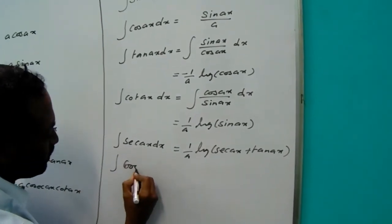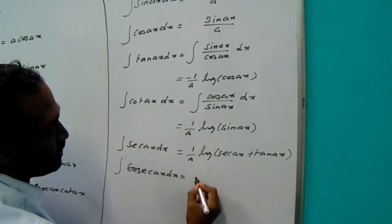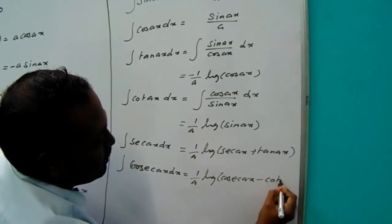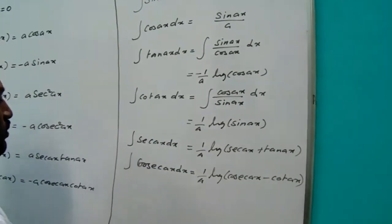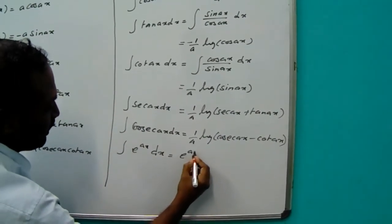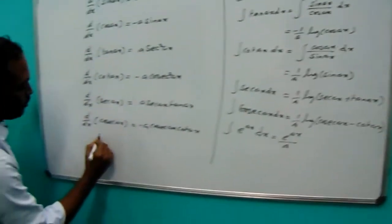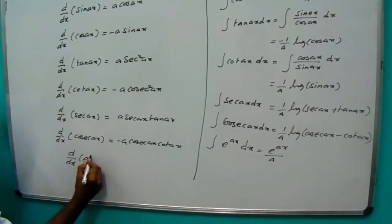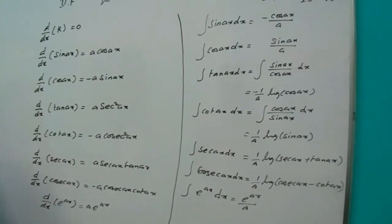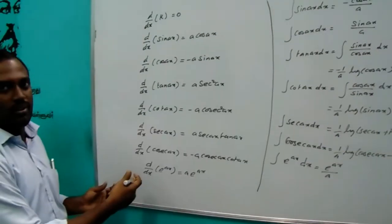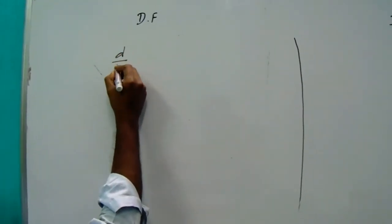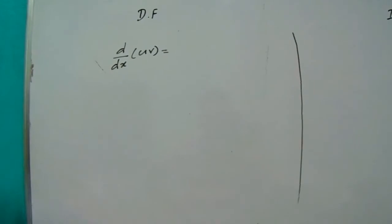The integral of cosec(ax) dx is 1/a times log of (cosec(ax) minus cot(ax)). This is the exponential formula: the integral of e^(ax) is e^(ax) divided by a. The differentiation of e^(ax) gives e^(ax) times a.